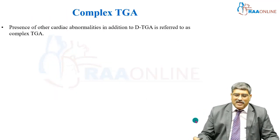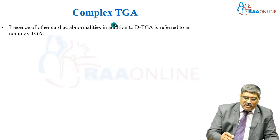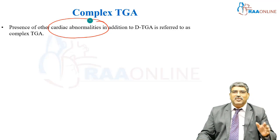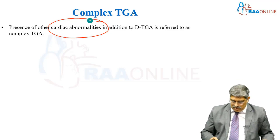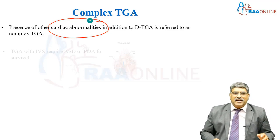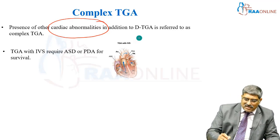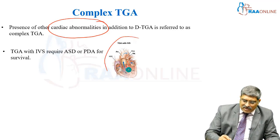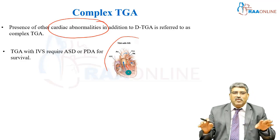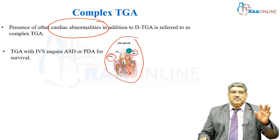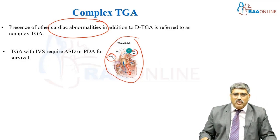Coming to complex transposition of the great arteries, the association with other cardiac abnormalities in addition to TGA is referred to as complex TGA. The first type is TGA with intact ventricular septum — there is no VSD. This requires an ASD or a PDA for survival to happen.